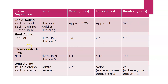Short acting insulins include Humulin Regular or Novolin Regular. Within that, your onset is just a little bit longer, your peak happens in two to five hours, with a duration of five to eight hours. NPH is an even longer acting type — onset of 1.5 hours, peak four to twelve hours, and duration of sixteen plus hours.